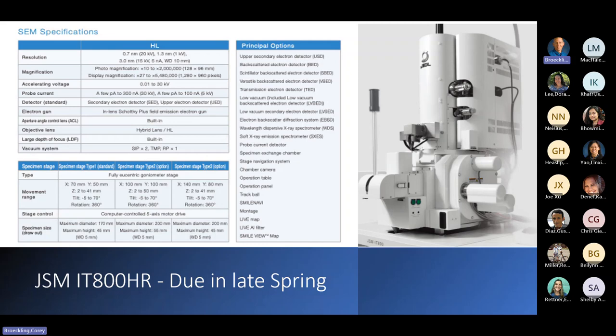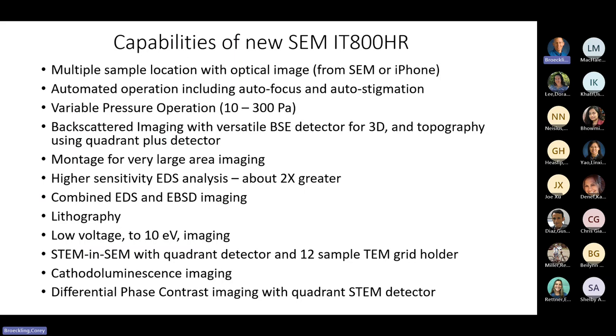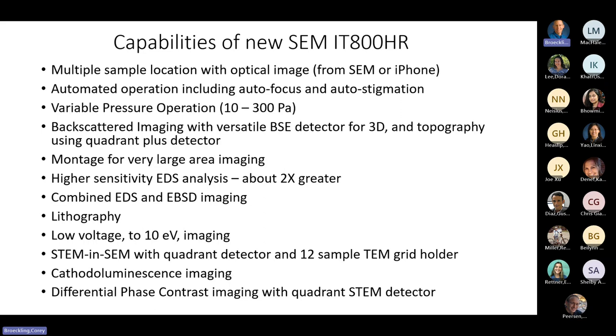The big thing that this one pushes is variable pressure and the low voltage. You can take your optical picture with the SEM or your iPhone. The automated operation, I'll show you examples of this. This is really useful for casual users where you can autofocus or auto-stigmate the image. It has variable pressure, you can do the backscattered, the montage, high sensitivity EDS. This will have the 170 millimeter squared EDS detector. So it will be at least twice as sensitive as what we have now.